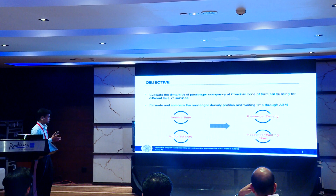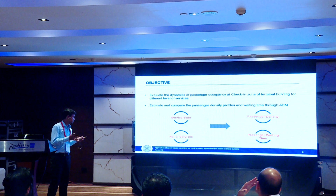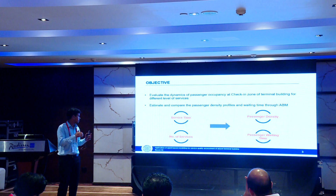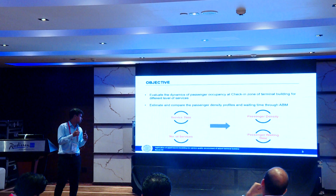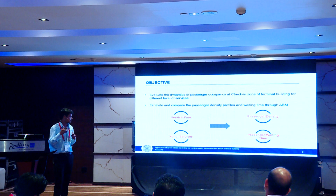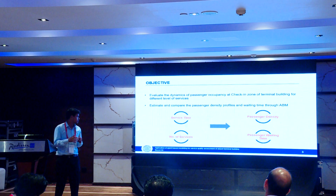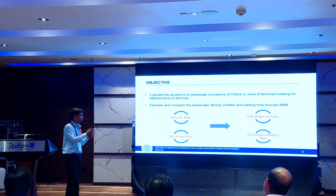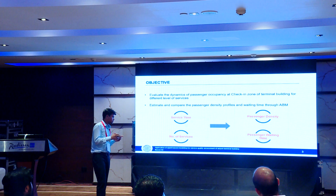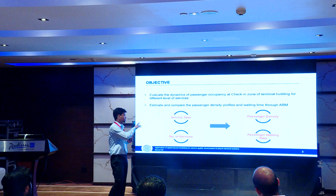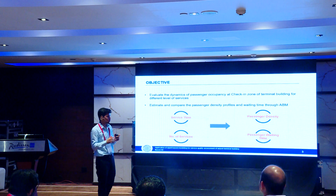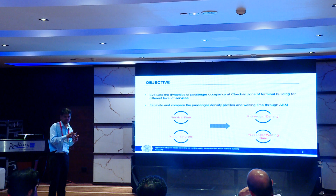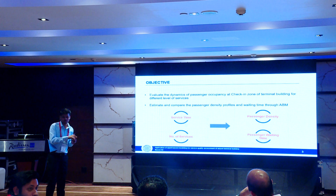We have two input parameters: service time and number of service counters. If we increase the service time and decrease the number of service points, we are decreasing the grade of level of service. For a particular class of level of service, we have two output parameters — passenger density and passenger waiting times — and corresponding to these parameters we have standards to classify which class of level of service the scenario follows.